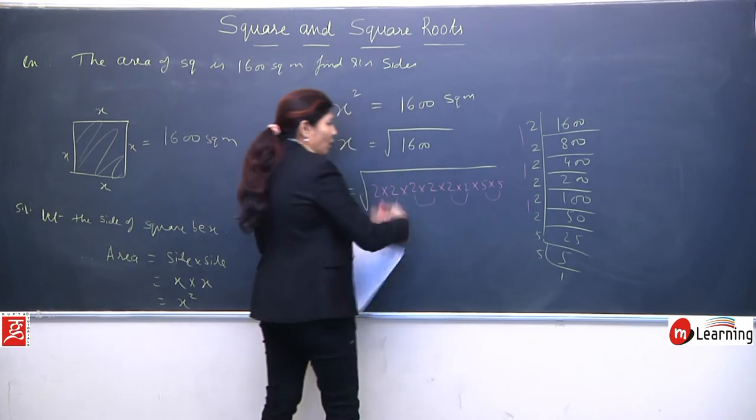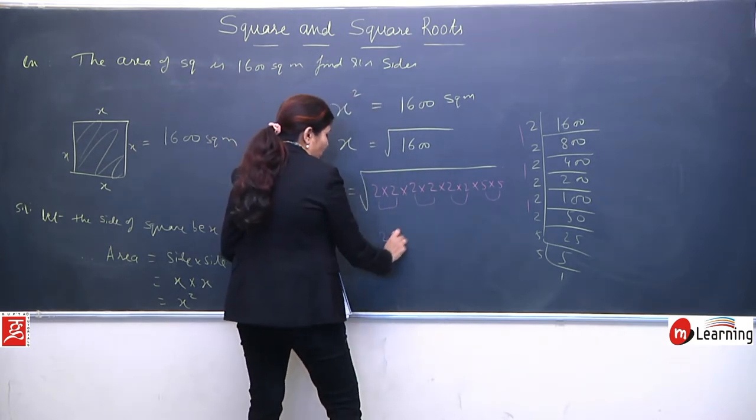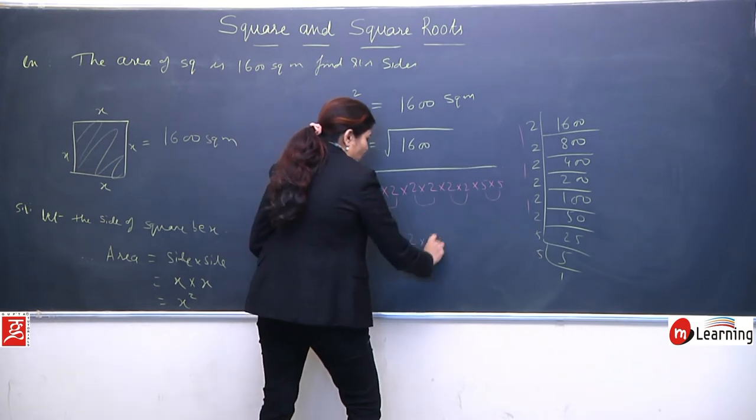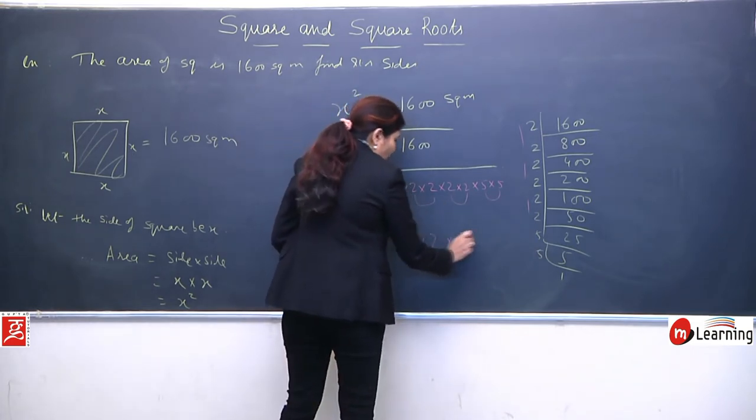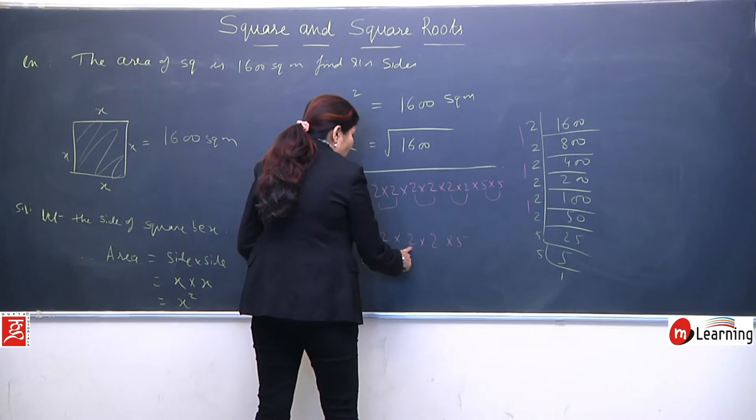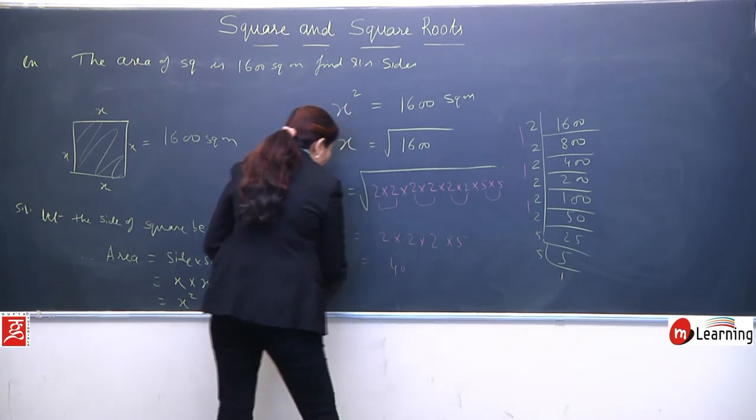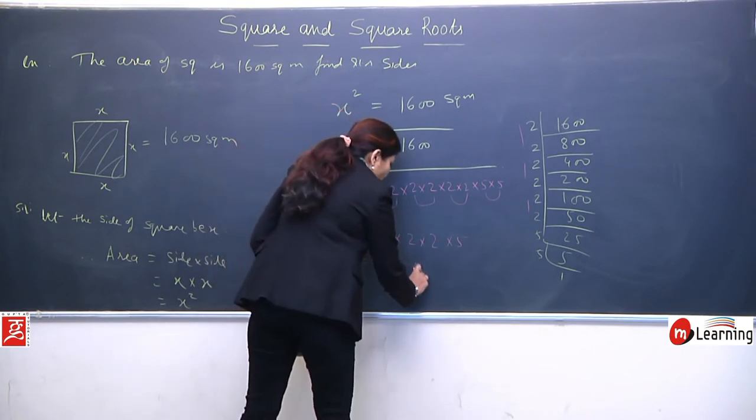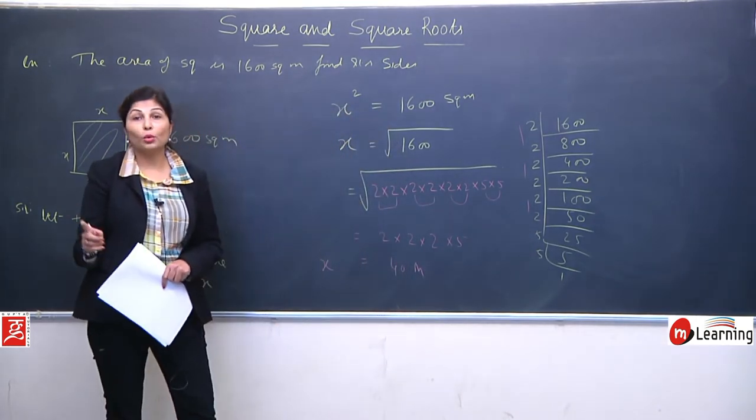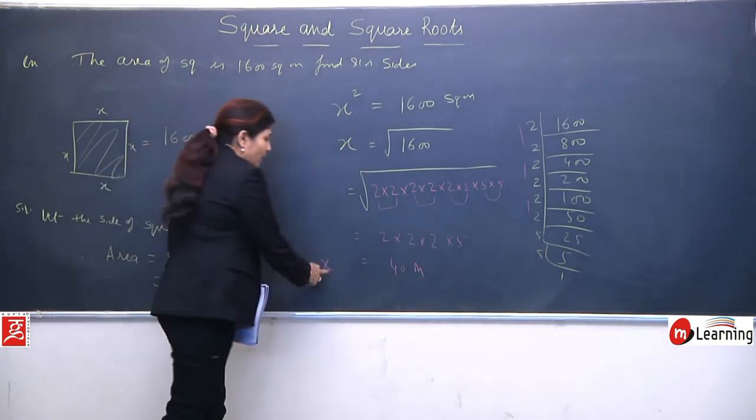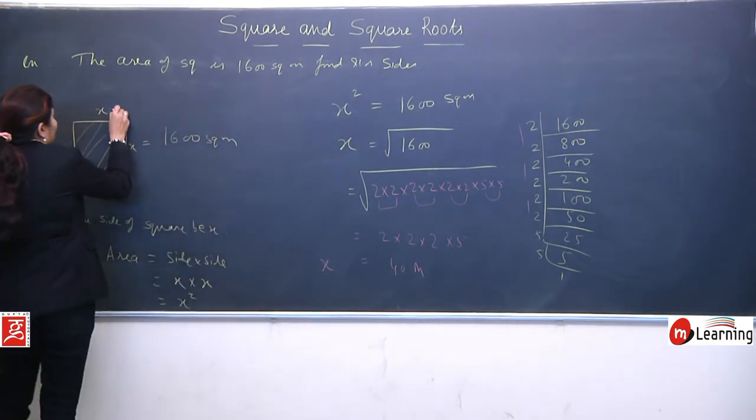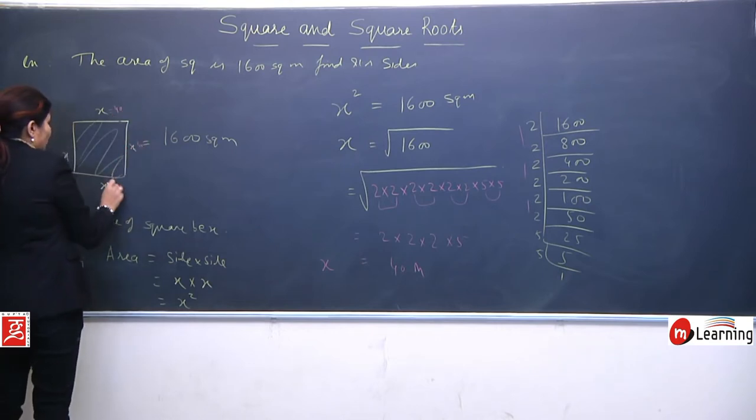So in place of 1600, I can easily write 2 into 2, 2 into 2, 2 into 2, and 5 into 5. If you apply the short method, make pairs of all and take one number from each. Two 2s make one 2, from this also one 2, from this also one 2 and 5. 5, 10, 20, 40. So your side, means x, is 40.